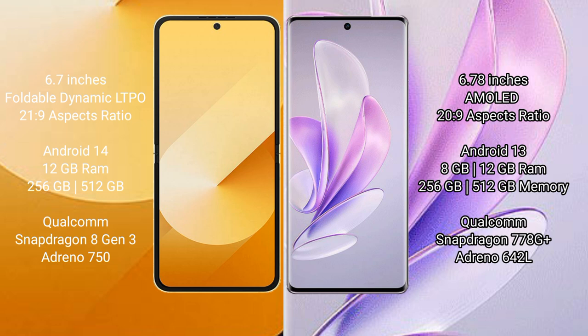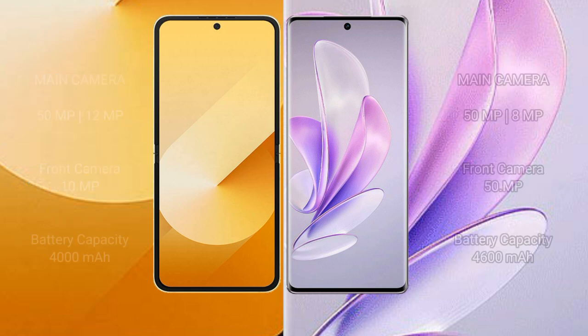Vivo A17 comes with 8GB or 12GB RAM and 256GB or 512GB internal storage, powered by the Snapdragon 778G processor and GPU Adreno 642L.